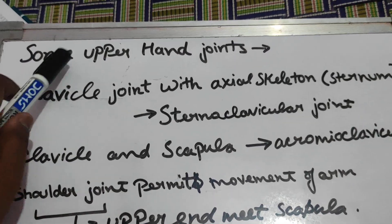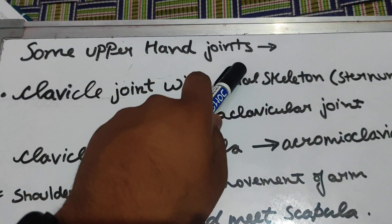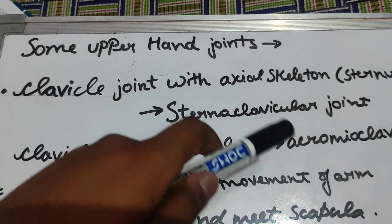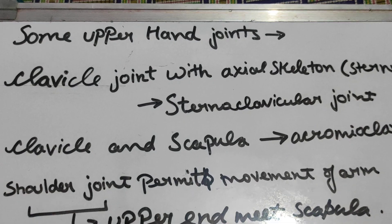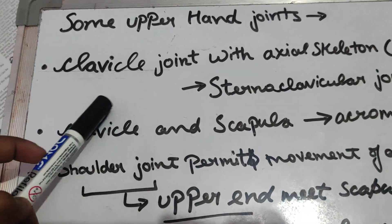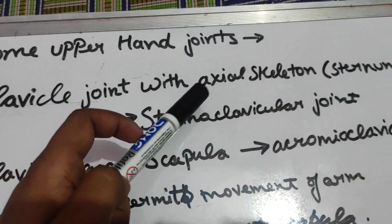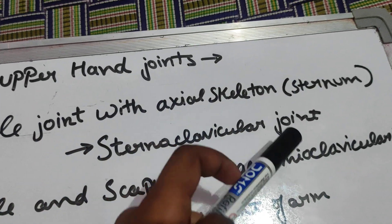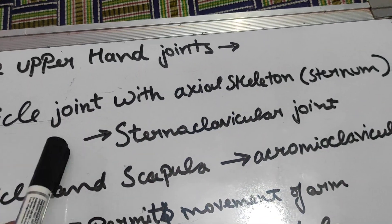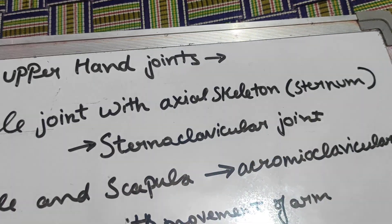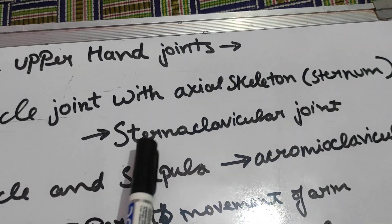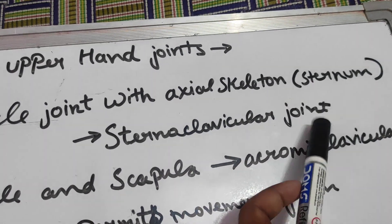Now let's talk about some upper hand joints. The joints are where the bones are attached. First, the clavicle joint with the axial skeleton. This means the clavicle joint with the axial skeleton is called the sternoclavicular joint.